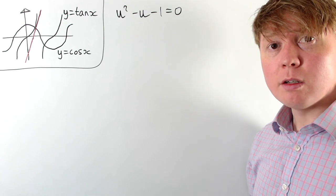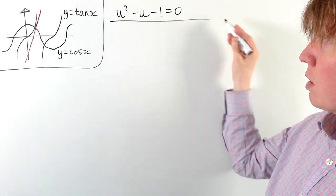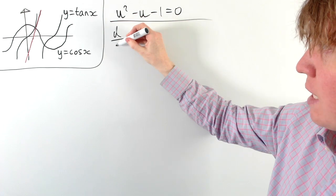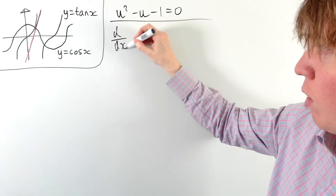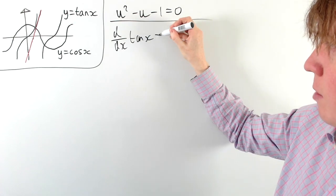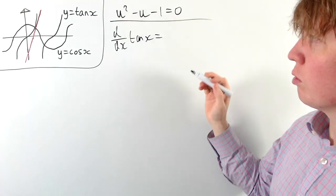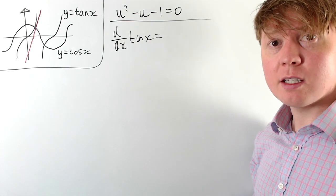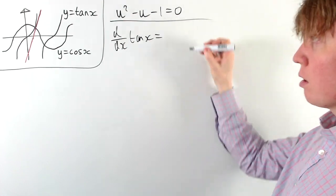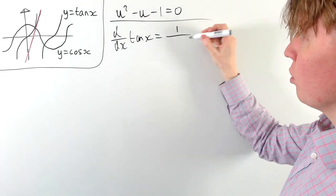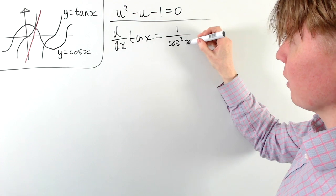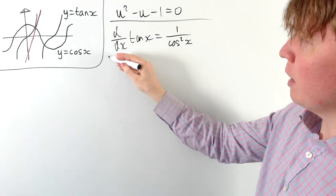To find the derivative of y equals tan x, we just differentiate tan with respect to x — we can do this using the quotient rule. We get sec squared x, which we'll write as 1 over cos squared x.